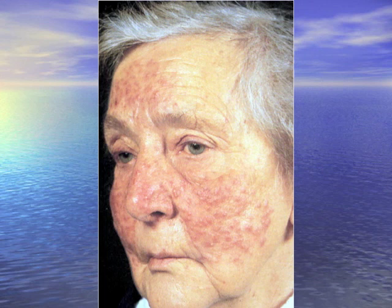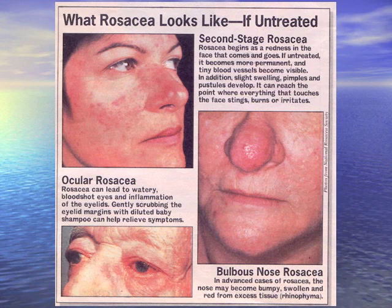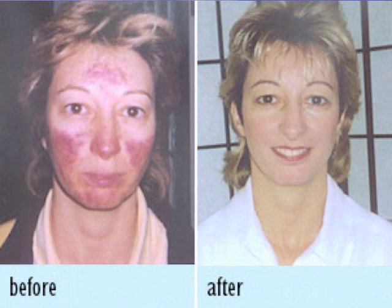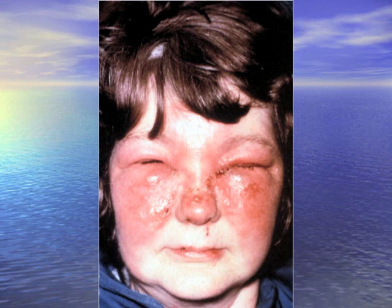Rosacea is common in the elderly — the bulbous nose variant is called rhinophyma. Treatment includes topical metronidazole (Metrogel), doxycycline, and clindamycin; telangiectasias occur chronically. The elderly can have an erysipelas rash resembling lupus — but unlike lupus, erysipelas does not spare the nasolabial fold. Treatment is good old penicillin.